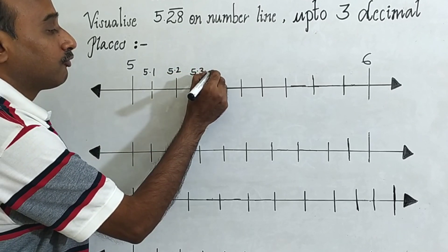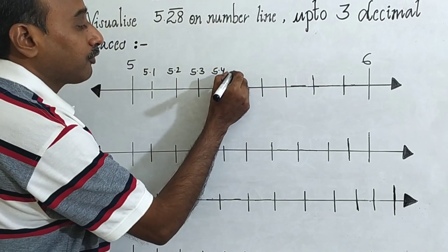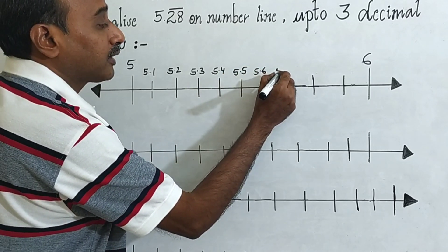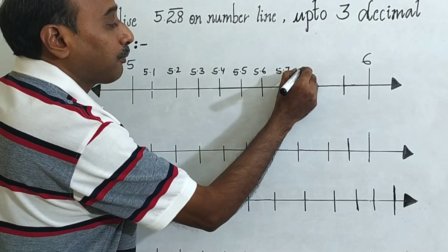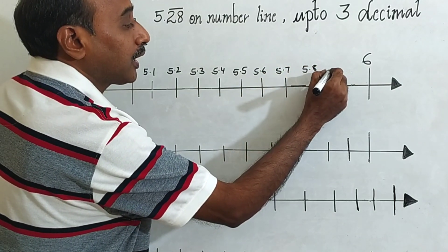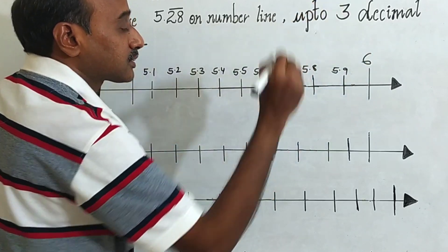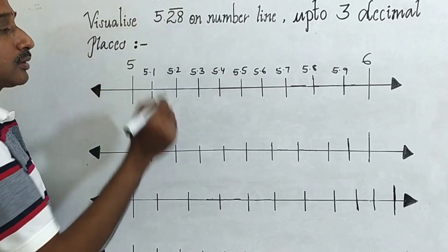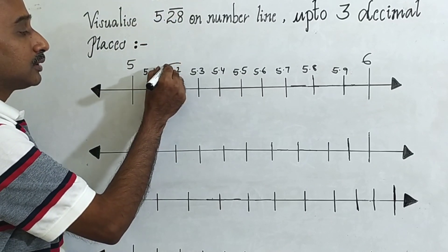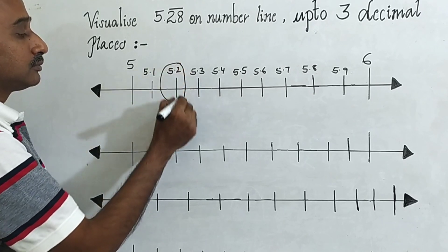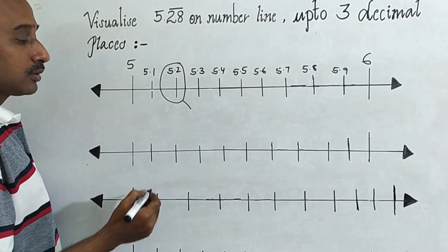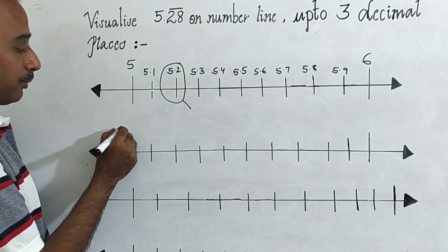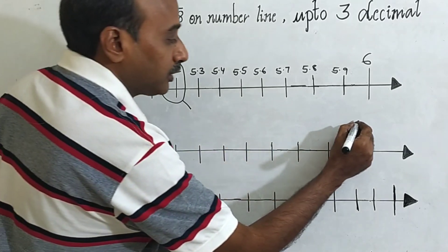5.3, 5.4, 5.5, 5.6, 5.7, 5.8, 5.9, 6. Now here 5.28 bar. Now come to 5.28. We can magnify it. Now come to take on the number line 5.2 to 5.3.